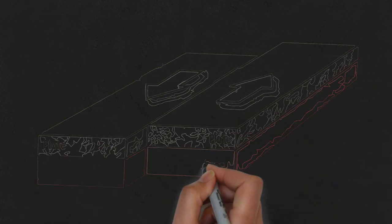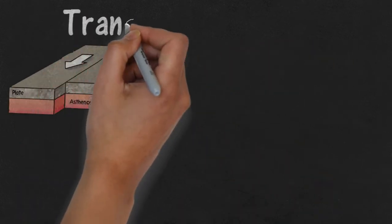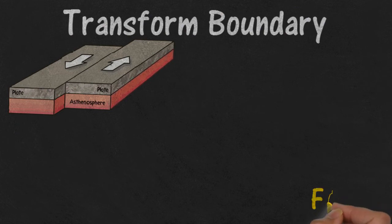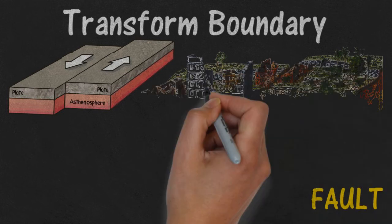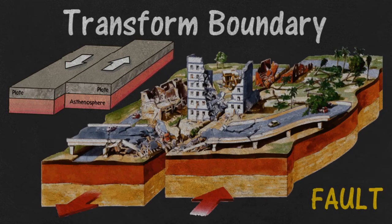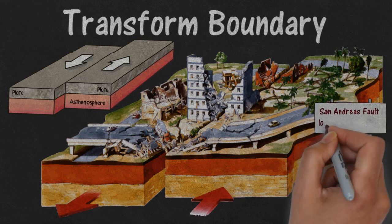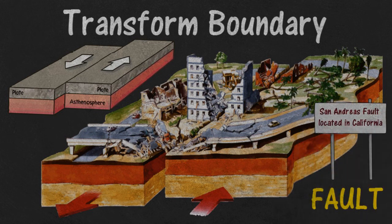The last type of boundary is called a transform boundary, also commonly referred to as a fault. At this boundary, the two plates simply slide past each other. Earthquakes often happen here. One really famous transform boundary in the United States is the San Andreas Fault, located in California. It's the reason why there are so many earthquakes in that state.